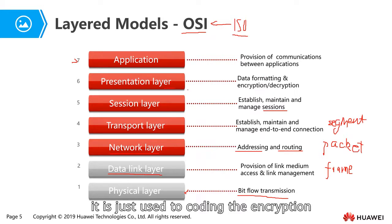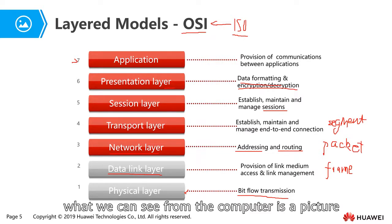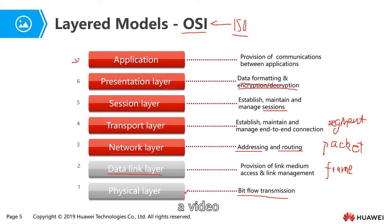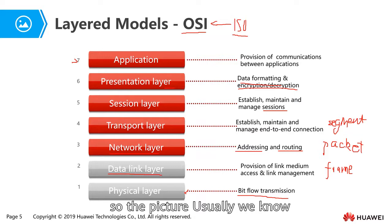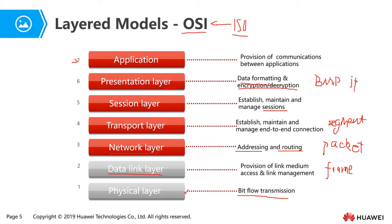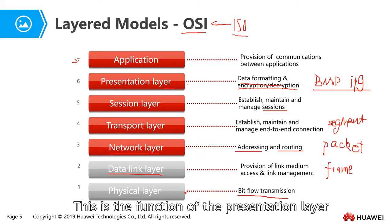The presentation layer handles coding — encryption or decryption — and data formatting. For example, what people see on the computer is a picture or a video, but in the computer's storage or when sending data, it is not a picture — it is data. The picture format, such as JPEG or BMP, is the format of the data. This is the function of the presentation layer.